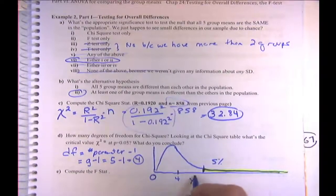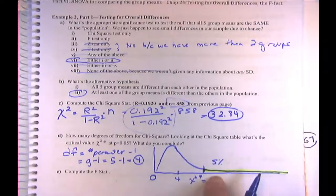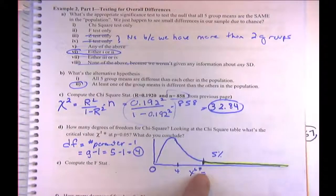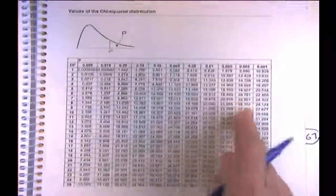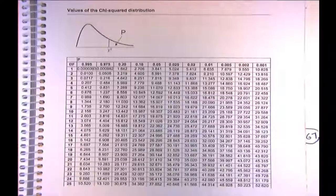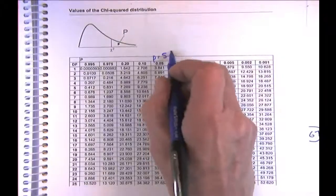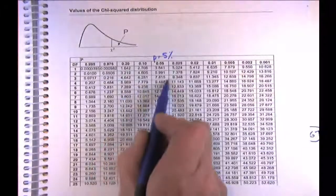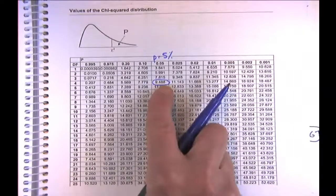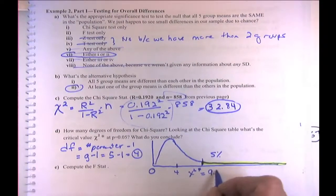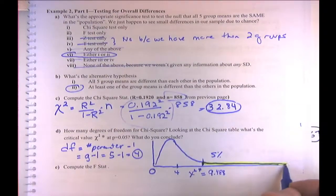Looking at the chi-square table at 4 degrees of freedom and p equals 0.05, the critical value is 9.488. Our chi-square of 32.84 is way beyond that — probably off the chart. So our chi-square is far out in the tail, and our p-value is approximately zero.